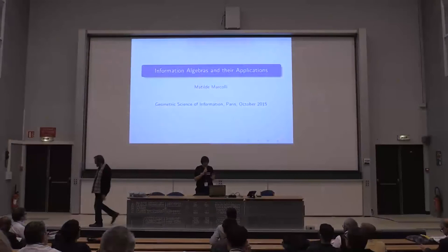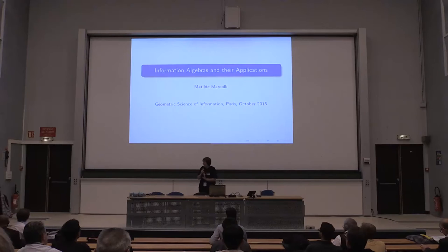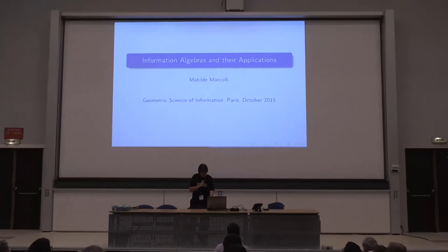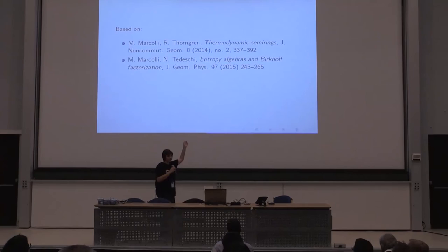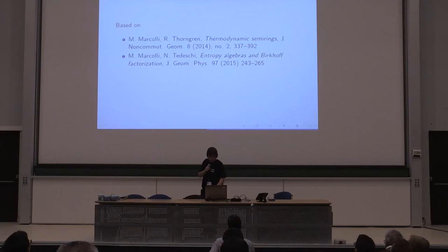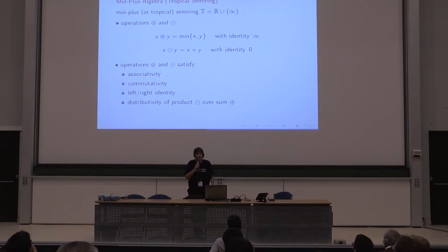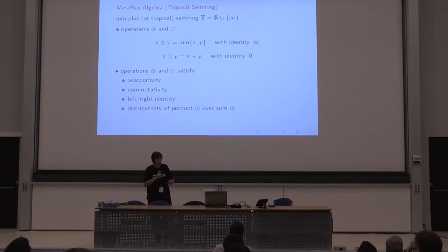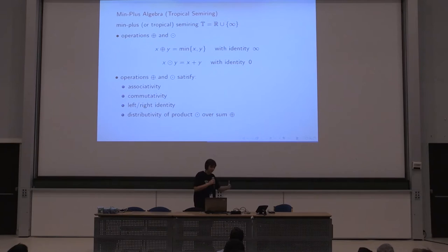I promise this is the last talk I give, and it's going to be a little less weird than the previous one. What I'm talking about here is largely coming from two papers that I wrote with two of my students, this year and last year. The idea is to look at min-plus algebras, which are also known as tropical semi-rings, for those who want to see them in terms of tropical geometry.